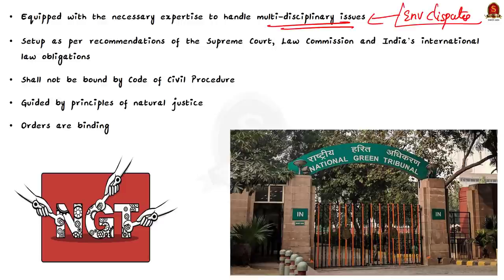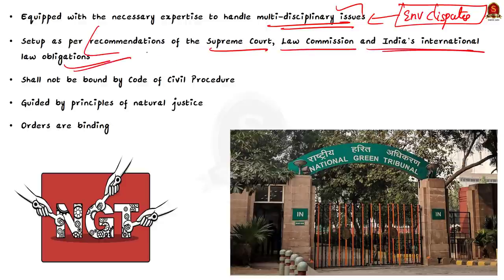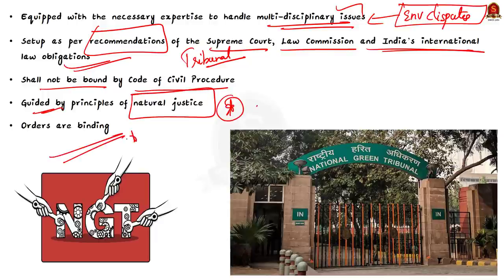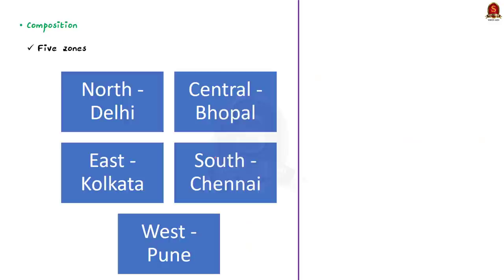The Supreme Court, Law Commission, and India's international law obligations recommended setting up a tribunal to develop and effectively implement national environmental laws. The tribunal shall not be bound by the procedure under the Code of Civil Procedure 1908, but shall be guided by principles of natural justice. Its orders are binding, and it has the power to grant relief in the form of compensation and damages to affected persons. The tribunal has a presence in five zones — north, central, east, south, and west. The principal bench is headquartered at Delhi; central zone is at Bhopal, east zone at Calcutta, south at Chennai, and west zone at Pune.